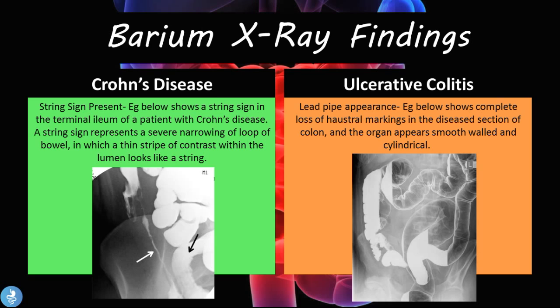In ulcerative colitis we have the lead pipe appearance, where there is a complete loss of haustration markings in the diseased section of the colon and the organ appears smooth-walled and cylindrical.